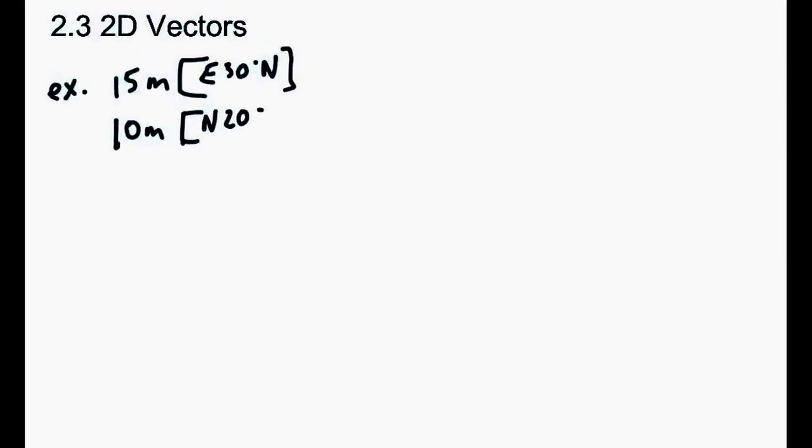So let's suppose our question is: a person walks 15 meters at east 30 degrees north, and then let's say they're going to go 10 meters after that, at north 20 degrees west.